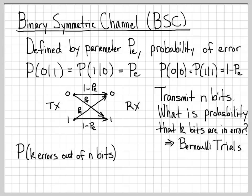So we have an easy way to write this probability. If I want to compute the probability that k errors have occurred out of the n bits, I can write this down very easily just using my Bernoulli trial expression. So that is n choose k times P sub E to the k times 1 minus P sub E to the n minus k. So this is a general expression for the probability that k errors have occurred out of the n bits.